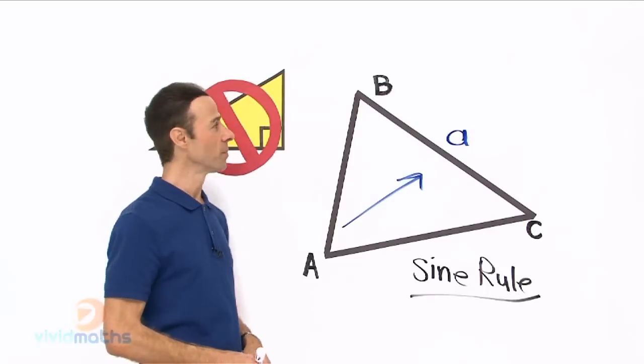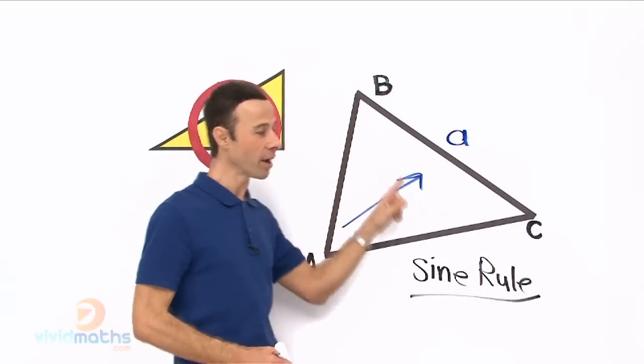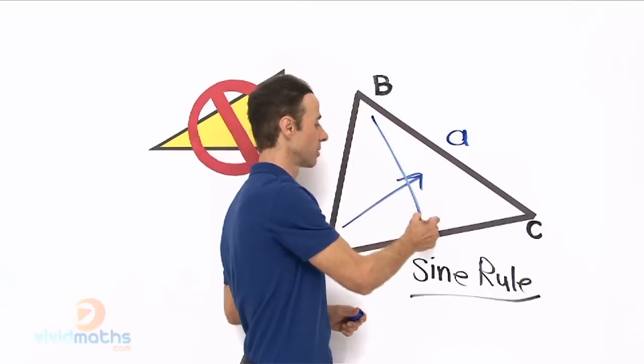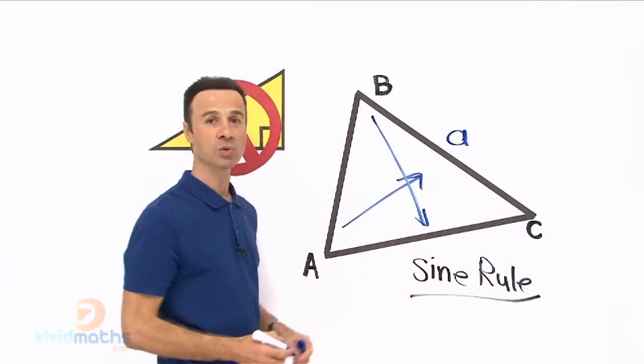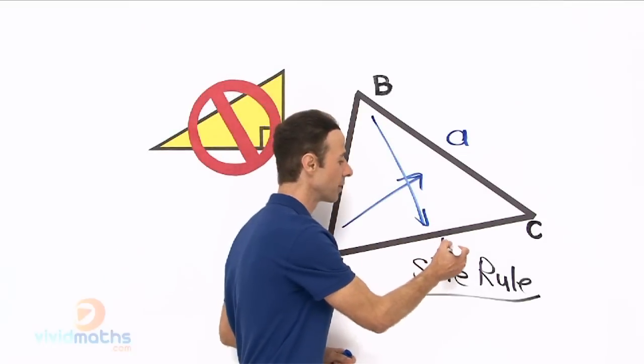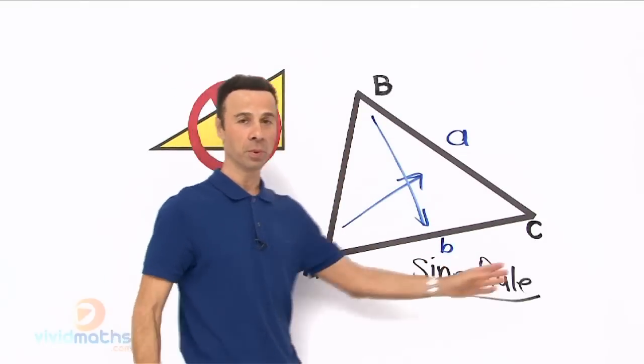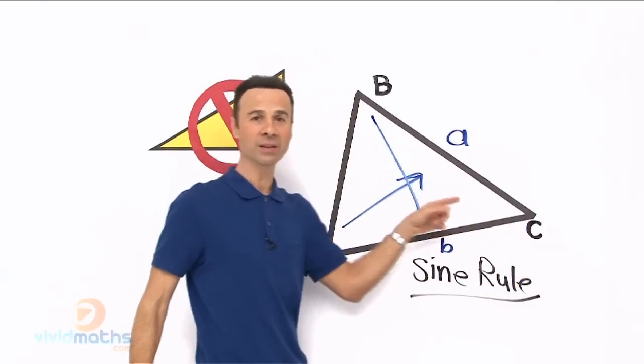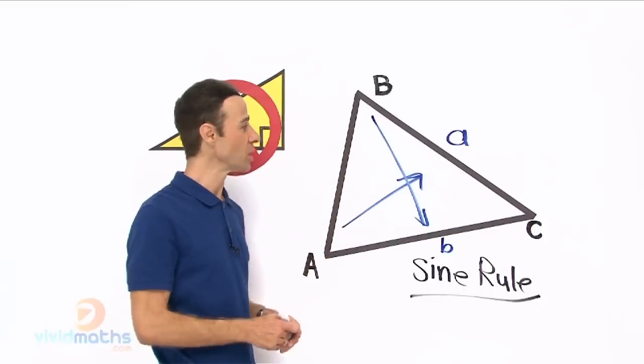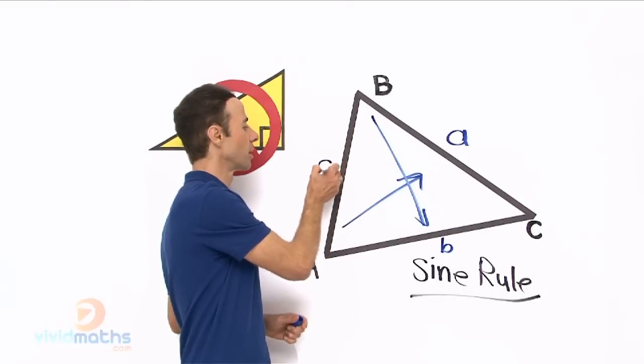Similarly capital B all the way across to the other side, the whole length is referred to as little b. And then finally big C over here, all the way across to the other side, the length is referred to as little c.